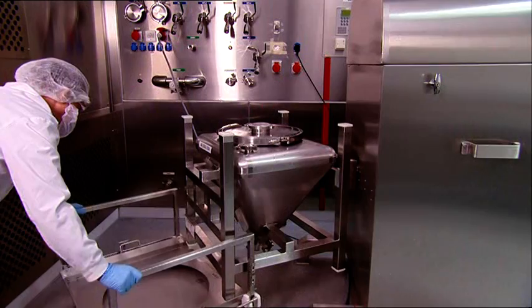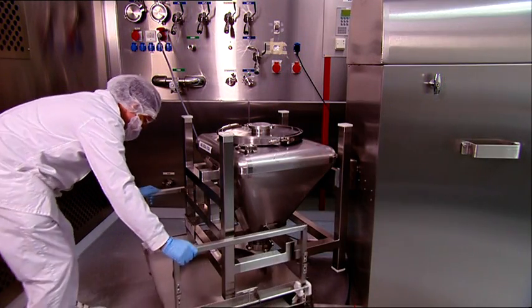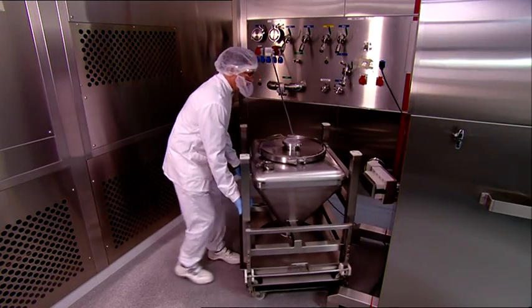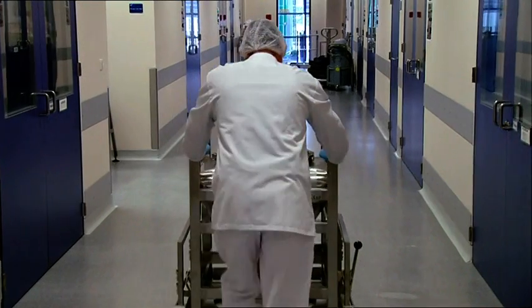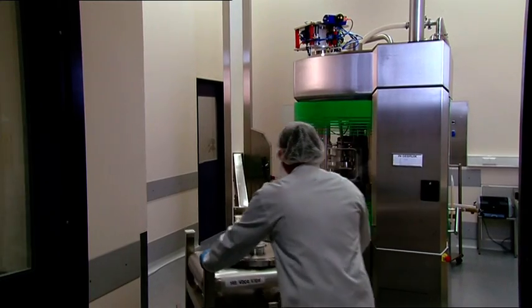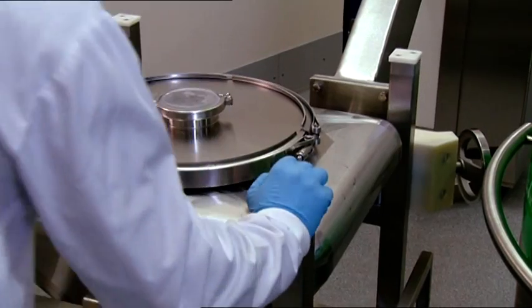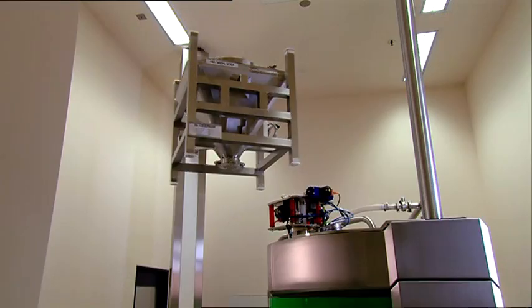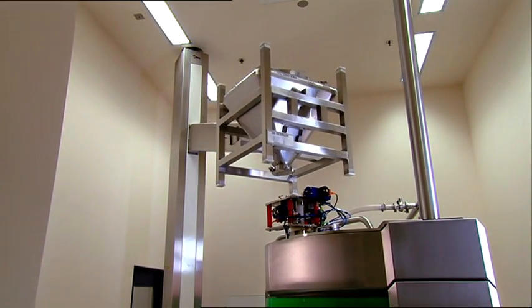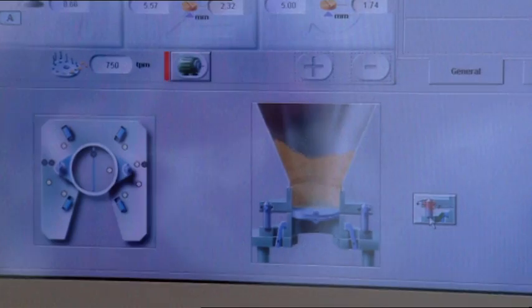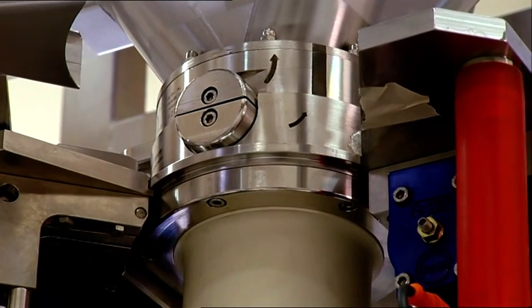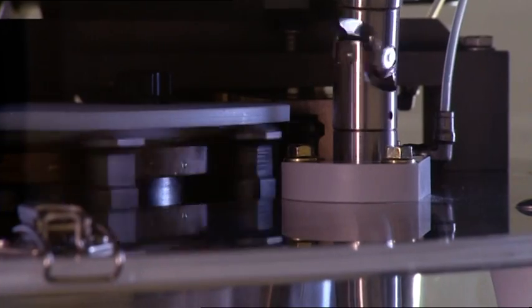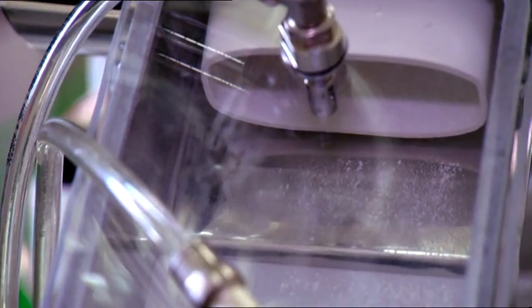Blending of the powder prior to tableting is done in a powder IBC on a single pedestal blender. The powder IBC is transferred to the compression room, lifted above the tablet press, where it is docked and opened. Tablet compression can now start.